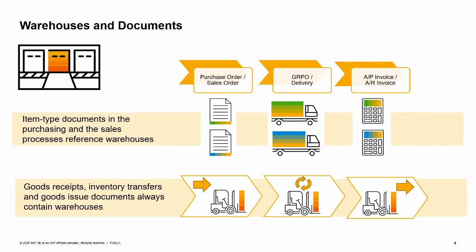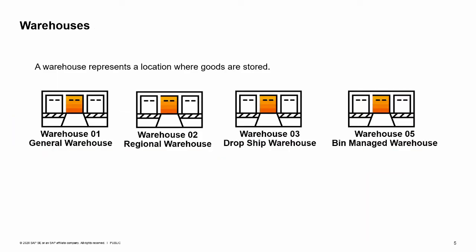Documents in the sales and purchasing processes reference a warehouse whenever they contain items. Inventory documents such as the goods receipt, inventory transfer and goods issue always reference a warehouse. Because warehouses are so key in any process involving items, we will look at how warehouses are defined and what they signify.